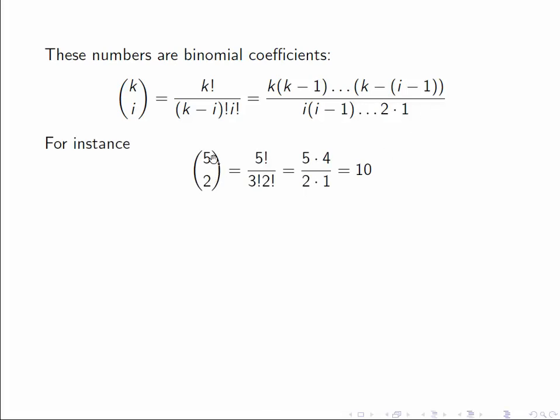For instance, 5 choose 2 is 5! divided by 3! times 2!. And in this form, it's 5 times 4 divided by 2!, 2 times 1. And we get 10. And that is the coefficient we saw in the expansion of (1+x)^5. It's the coefficient of x^2.